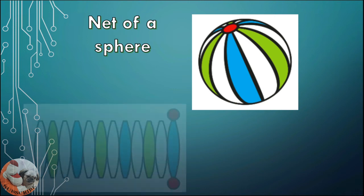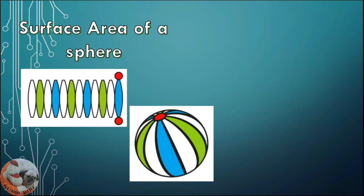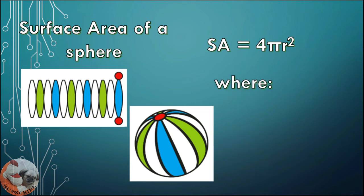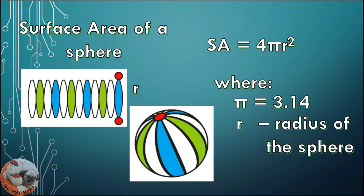This is the net of a sphere. Surface area equals 4πR², where pi equals 3.14 and R is the radius of the sphere.